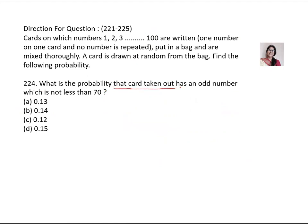What is the probability that card taken out has an odd number which is not less than 70? That means above 70. So how many numbers are there above 70 and they are again odd? So you will start from 71 to 100. So how many numbers are there? 30 numbers are there. 15 odd, 15 even.